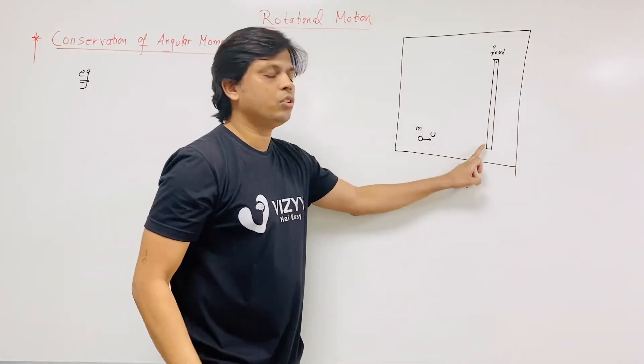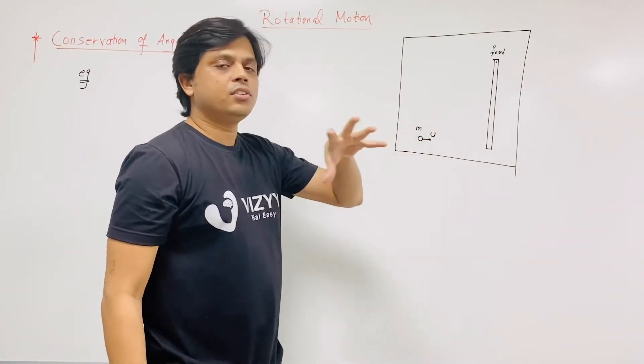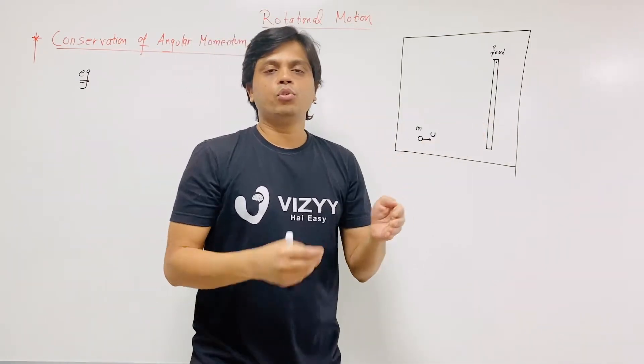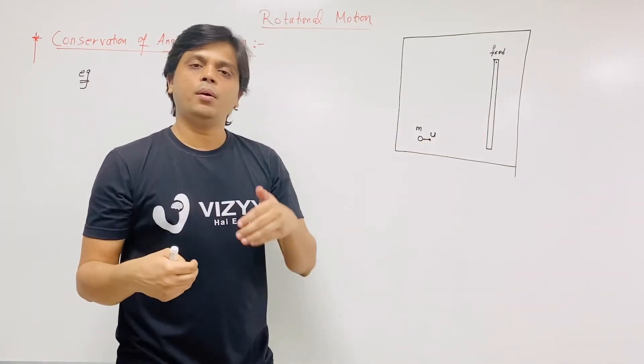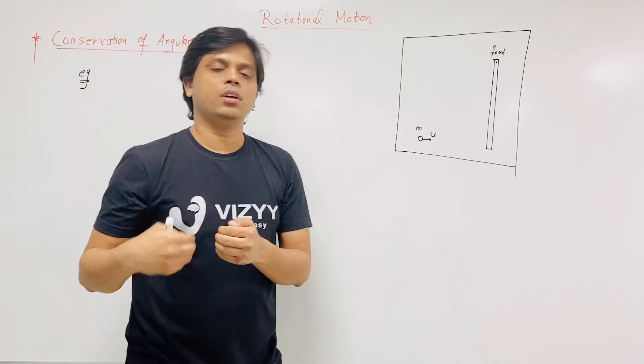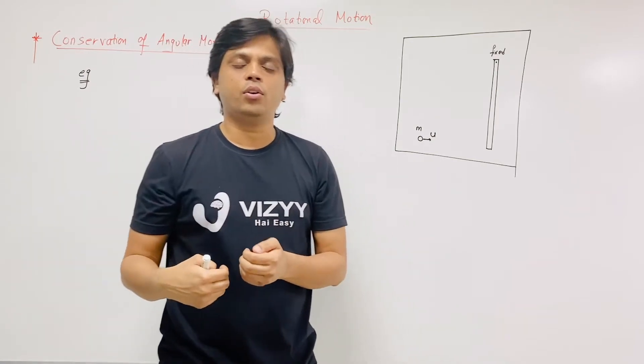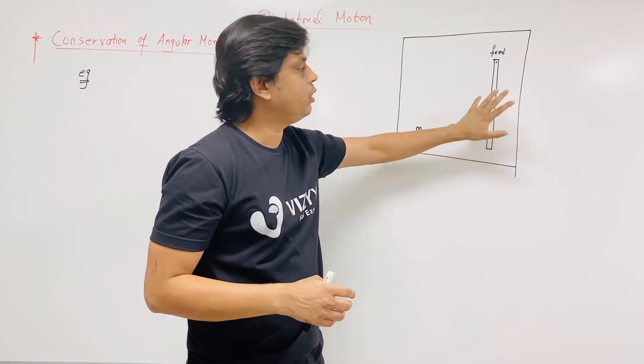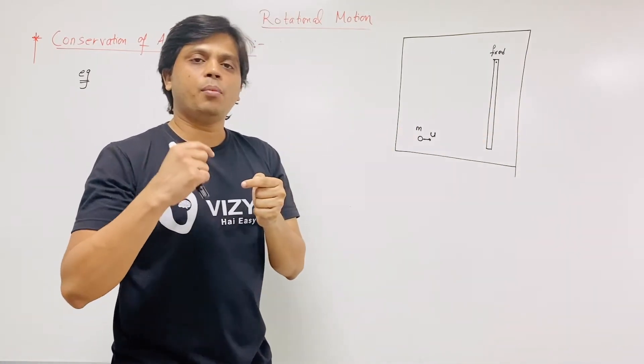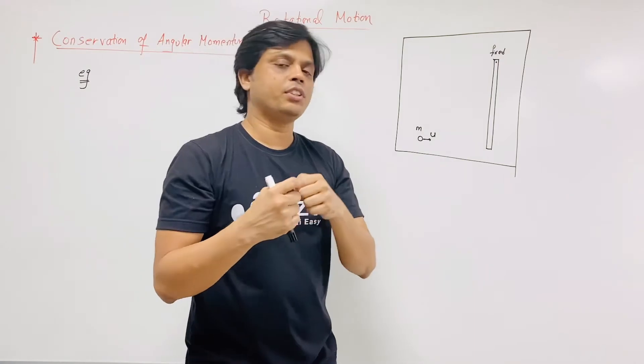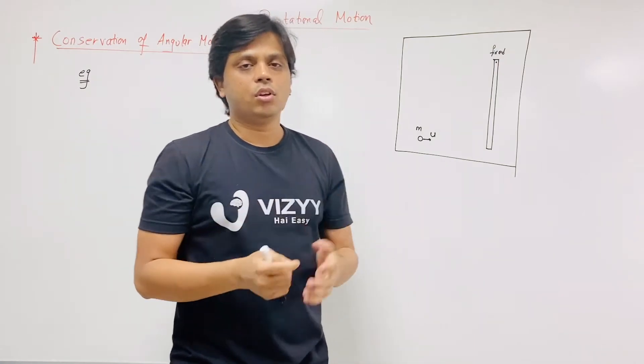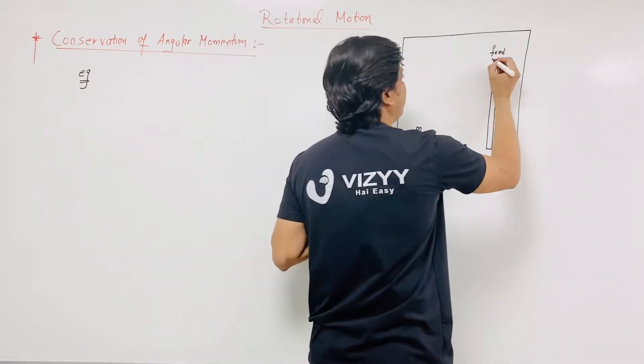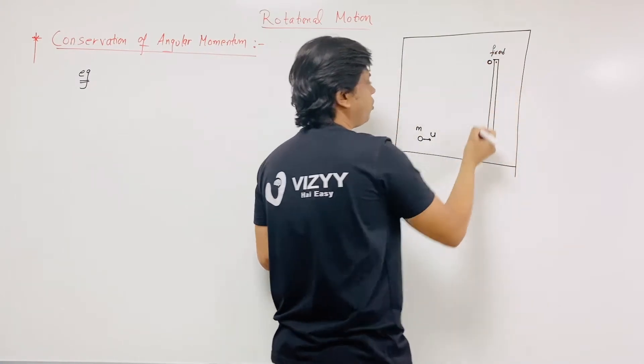Because there are also considerations for a system. So when ball will hit this rod, if you are only considering ball then external force is applied on this ball by rod. So due to that force torque is there, external torque is there. And if you are considering this rod to be alone then this external force is applied by ball on this rod. So external torque is applied on this rod with respect to this point O, external torque.